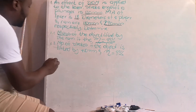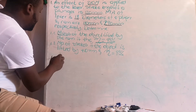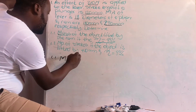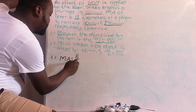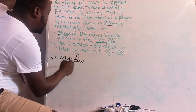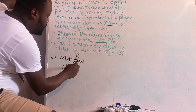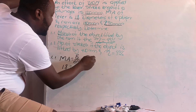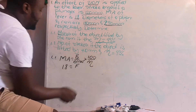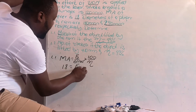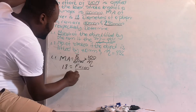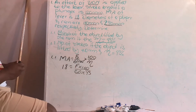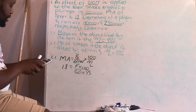Under question 1.1, mechanical advantage equals force of plunger over effort, multiplied by 100 over efficiency. So: 18 equals force of plunger over 210, multiplied by 100 divided by 93. Solving for force of plunger gives you the output force.